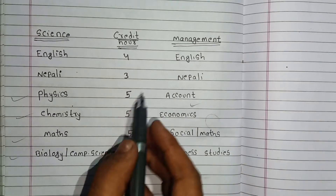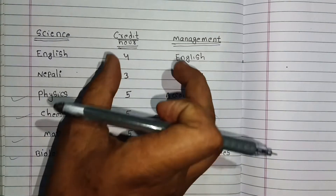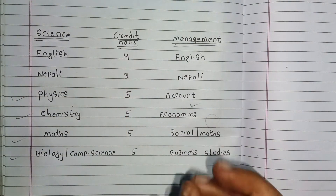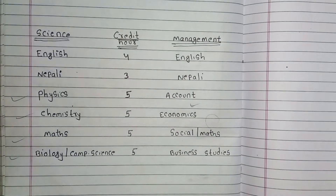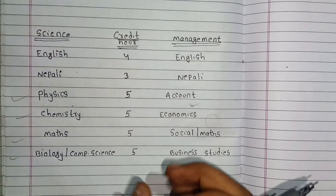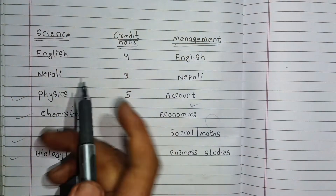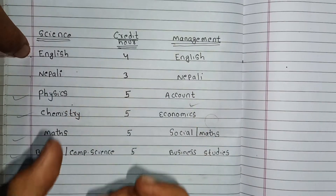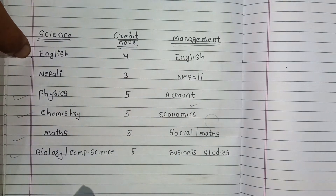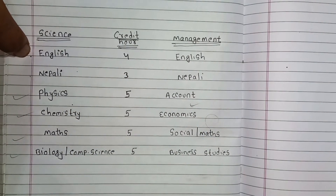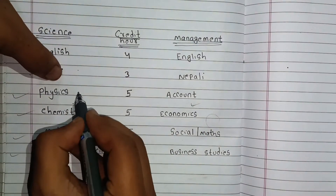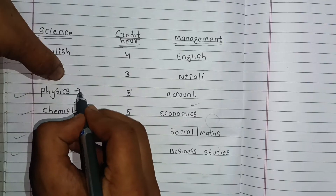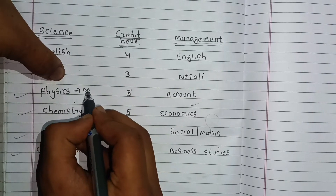Therefore, the number of things matters. If you have 4 subjects, you have to do the credit. But the credit is different in Nepal compared to other systems. In English or Nepal, if you think of Physics, you will have a B+ in theory.